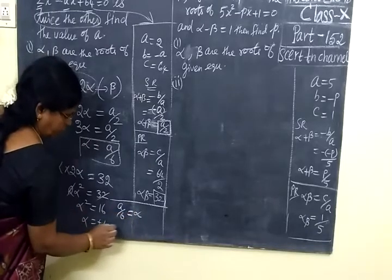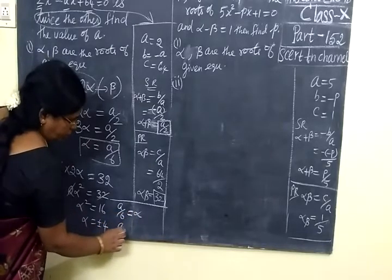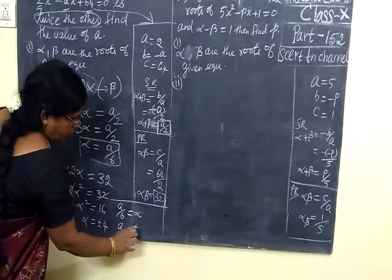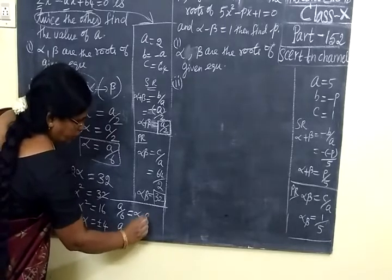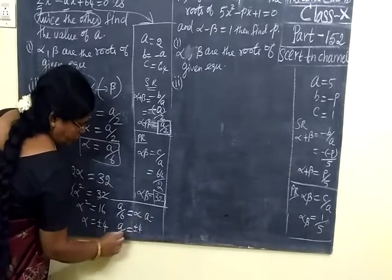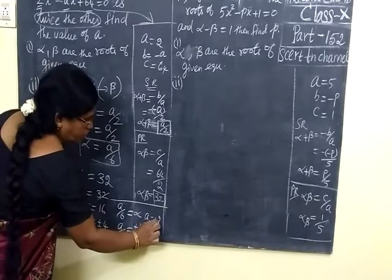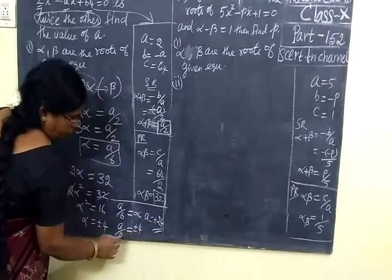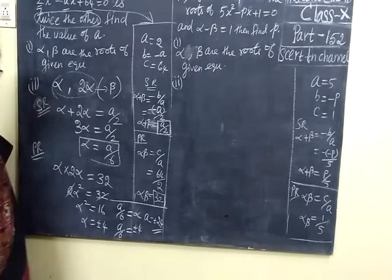You are getting a by 6 equal to alpha. Alpha equal to 4. So a by 6 equal to plus or minus 4. So a equal to, the 6 will go that side. You are multiplying.